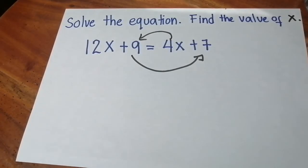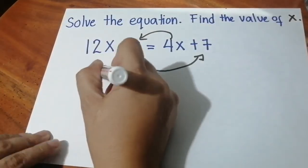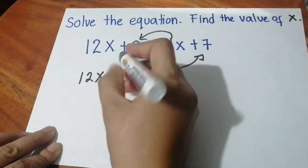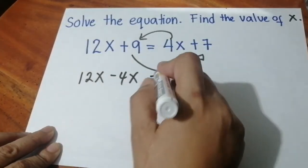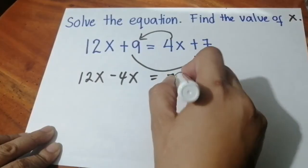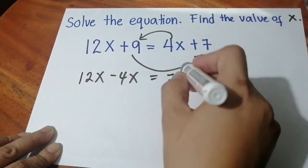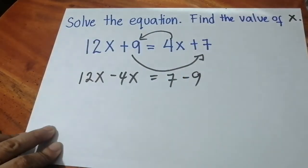Doing that, we're going to get 12x here. From positive 4x, it will become negative 4x. This 7, just rewrite. From positive 9, it will become negative 9.